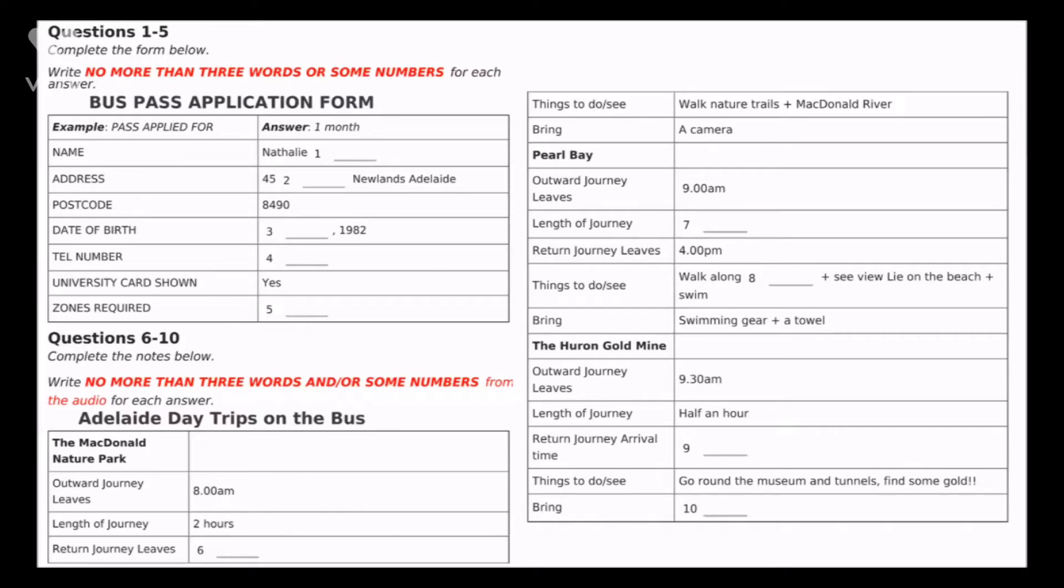Right. The first one goes up to MacDonald Nature Park. The bus leaves at 8 o'clock and takes about two hours to get there, and leaves for the return at 4.30 in the afternoon. Once there, you can walk around the nature trails. It's really nice, and the MacDonald River runs through there, and that's really beautiful, so take a camera with you.